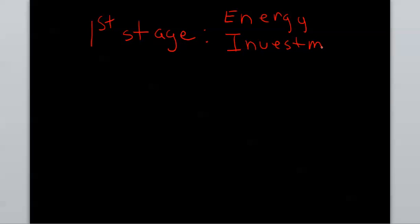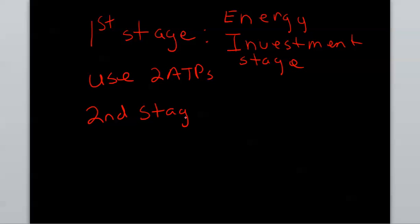Glycolysis has two stages. The first stage is the energy investment stage. Here we have to use two ATPs. We have to spend energy, use energy to get energy. The second stage is the energy payoff stage.